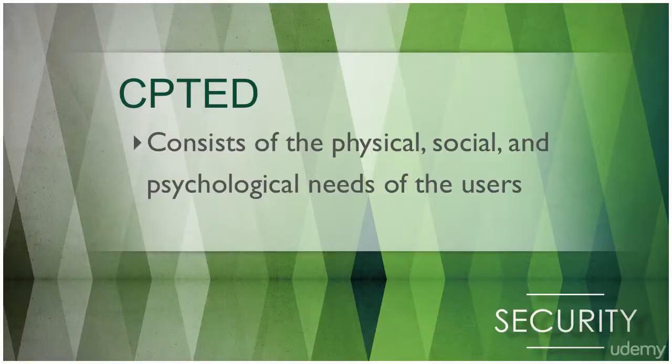CPTED consists of the physical, social, and psychological needs of the users. CPTED also has three main strategies that bring together the physical environment and social behavior to improve overall protection. These strategies are natural access control, natural surveillance, and natural territorial reinforcement.